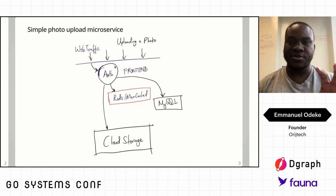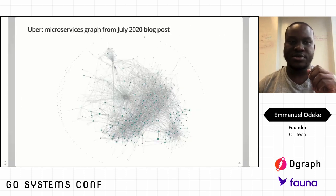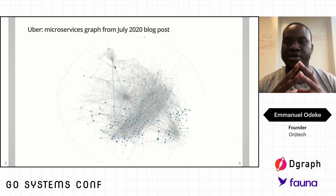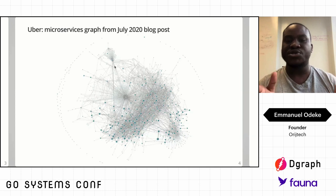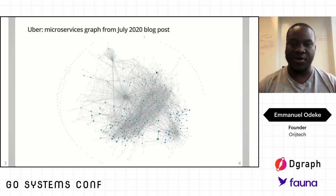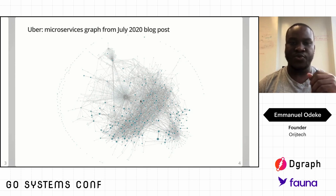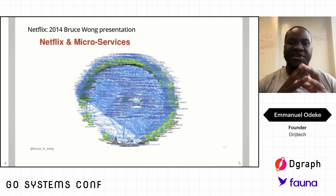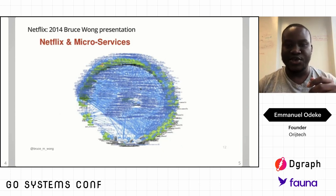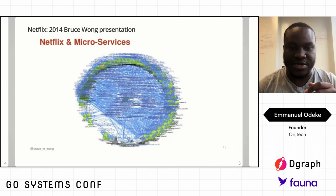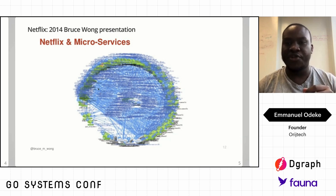Coming from that simplicity, we can get to this. Right here is an excerpt from a July 2020 blog post from Uber, showing the graph of their microservices. Look at how crazy dense this is — very, very many microservices. The next one comes from Netflix. This graph is very dense; you could barely discern anything. But this is what their microservices look like and how they talk to each other.